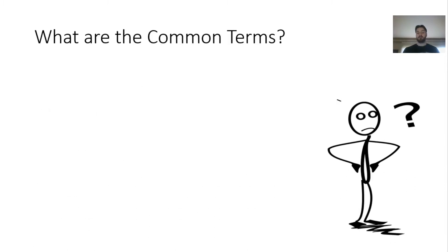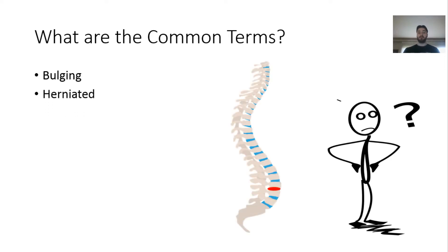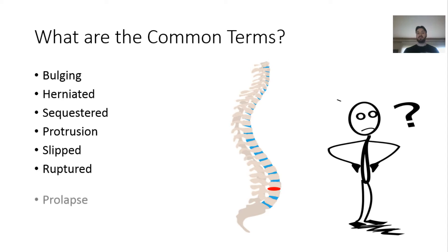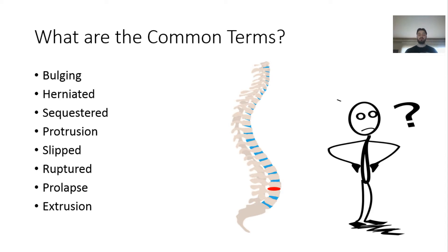To begin, we have to identify what are the common terms associated with spinal disc injuries or spinal disc abnormalities. We can look at a bulging disc, which is one of the most common terms. But also another common term is herniated disc. Then there's also sequestered disc, disc protrusion, slipped disc, ruptured disc, disc prolapse, and disc extrusion. As you can see, this is a pretty big list of terms, and they're all commonly referred to in terms of spinal disc abnormalities or injuries. It can get confusing because there are a lot of terms and they all have very similar meanings when you look at their definitions.